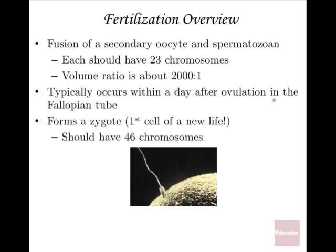Fertilization typically occurs within a day after ovulation in the fallopian tube, in the infundibulum near the fimbriae, closer to the ovary. If fertilization happens on the second or third day, the egg will have gotten closer to the body of the uterus. A zygote is the term for the first cell of a new life, and it should have 46 chromosomes if all is well.